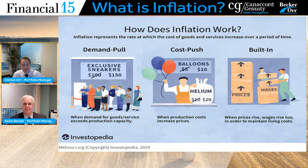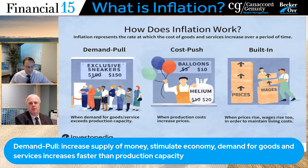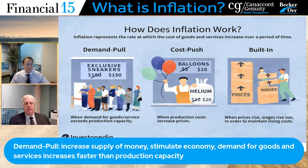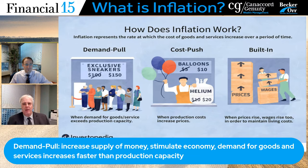Demand-pull inflation is basically too many customers chasing too few goods. With increased supply of money, a stimulated economy, demand for goods and services is going faster than what production capacity can handle. Some of what we've got right now is due to supply constraints. For example, everybody's talking about the Christmas season — if there aren't as many goods as you want, those costs are going to go up because it's a special item. That's demand-pull in a nutshell.